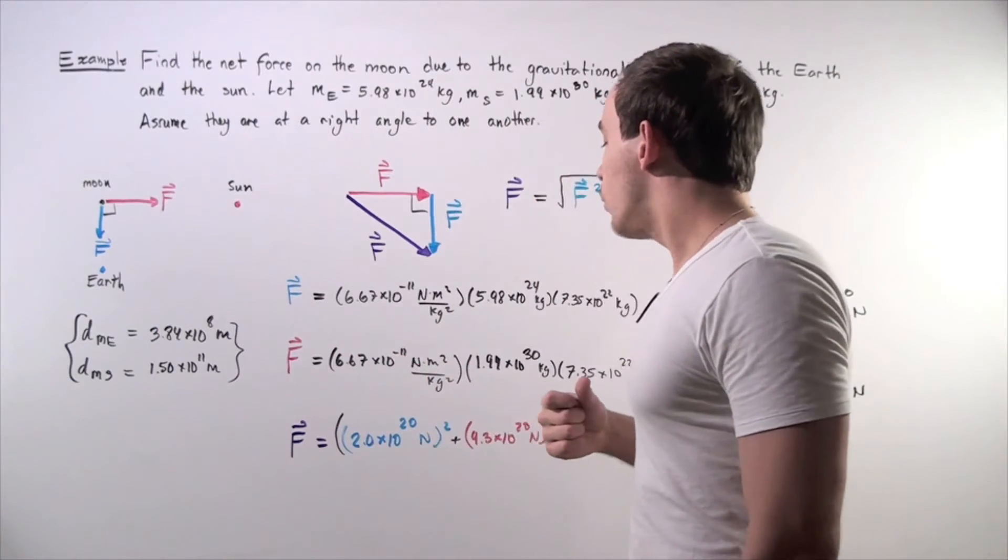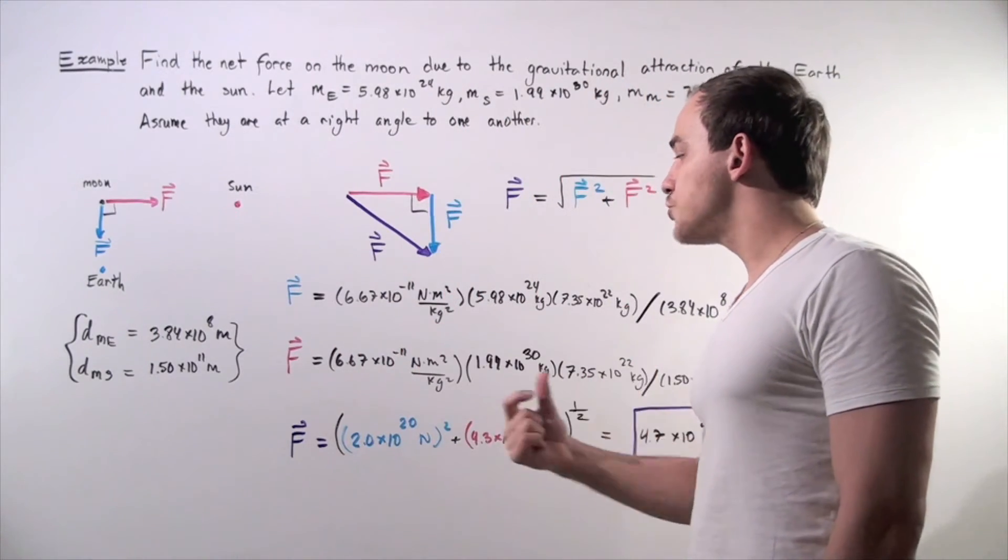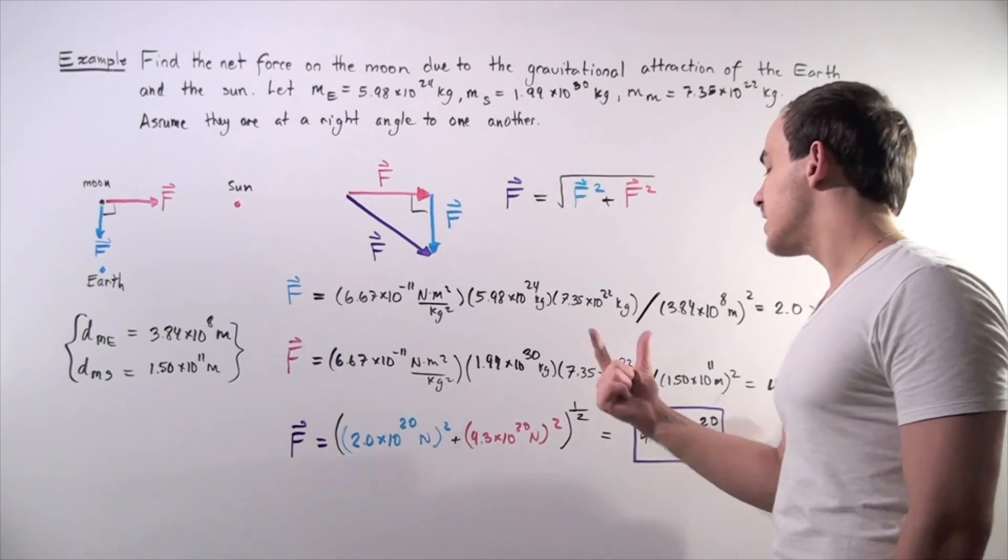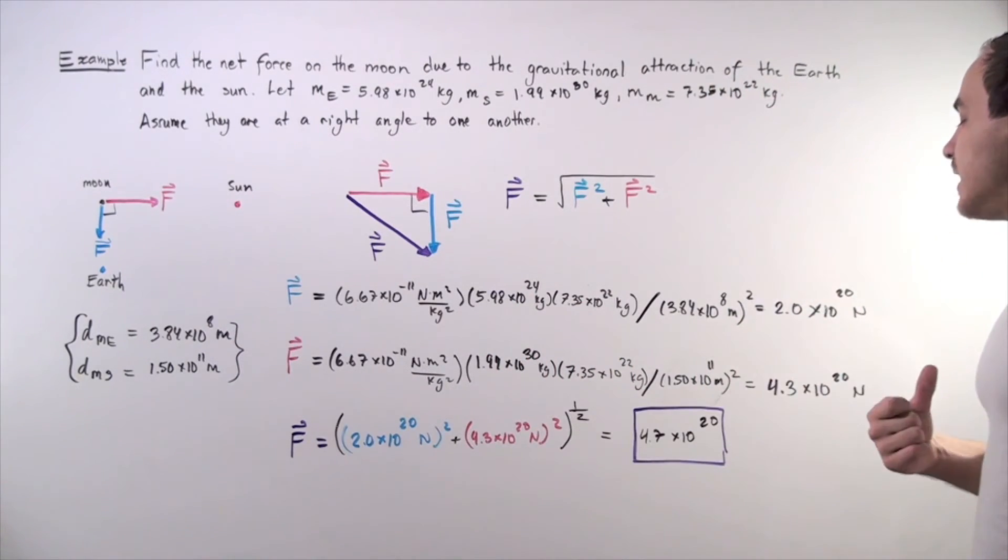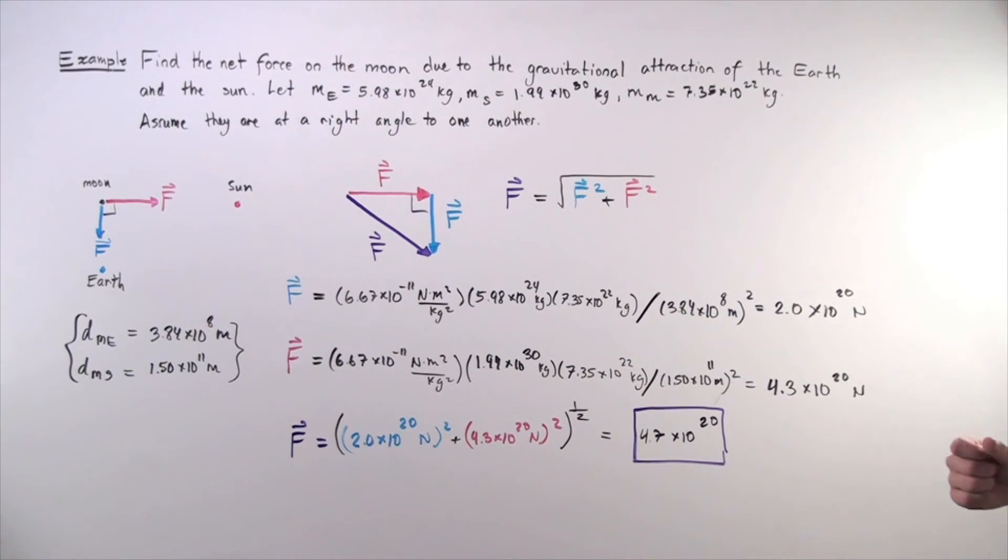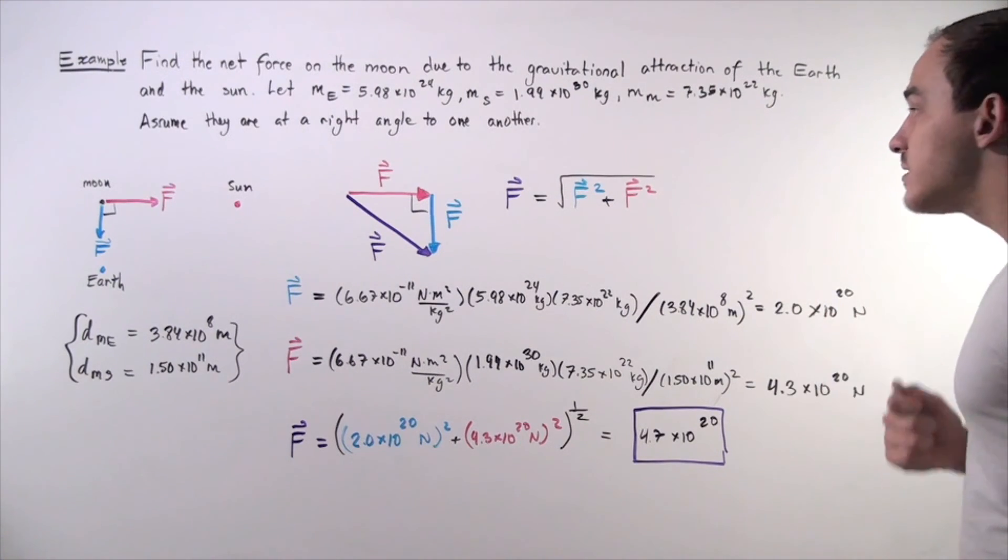So in order to find the pink vector or the red vector, we simply plug in our values. So our G multiplied by the mass of the Sun, multiplied by the mass of the Moon, and divide that by the distance between them squared, and we get approximately 4.3 times 10 to the 20 Newtons.